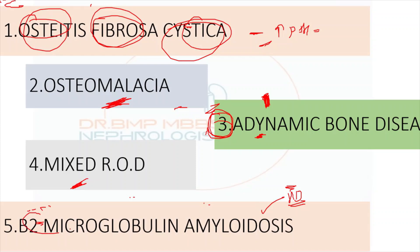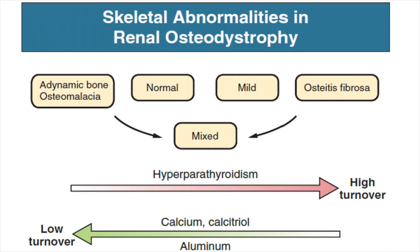The last manifestation is beta-2 microglobulin-related amyloidosis, which is more common in hemodialysis patients. Beta-2 microglobulin gets deposited in tendons and causes carpal tunnel syndrome and other amyloidosis-related manifestations. This is not directly related to calcium and phosphorus, but since it occurs in CKD and causes deposition, it is included under CKD-MBD as part of its broad spectrum description.